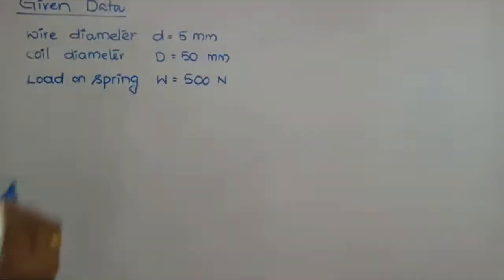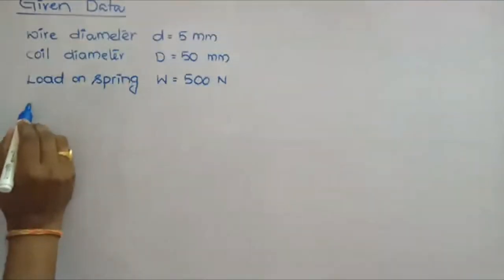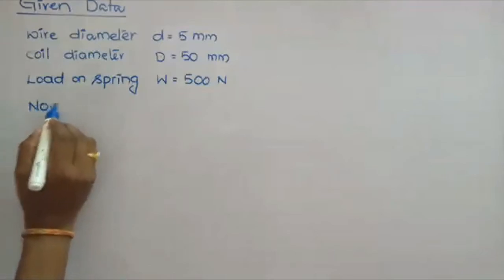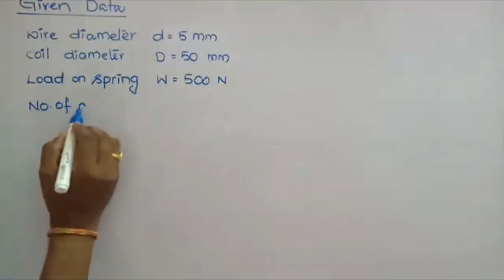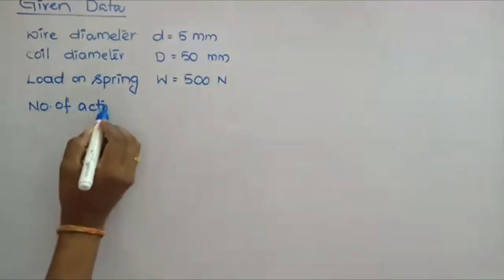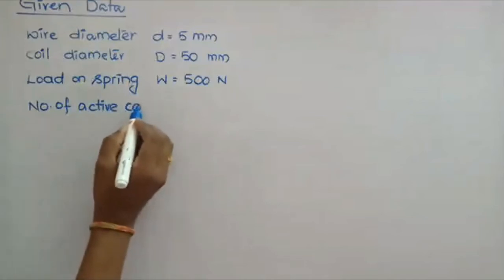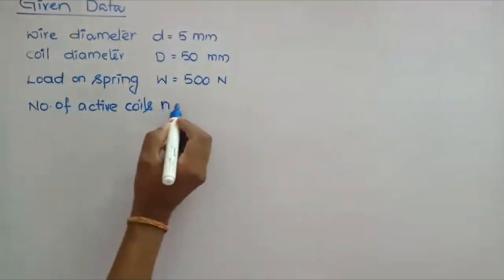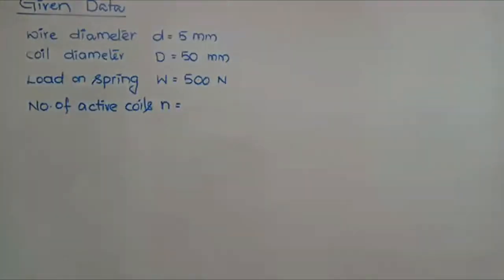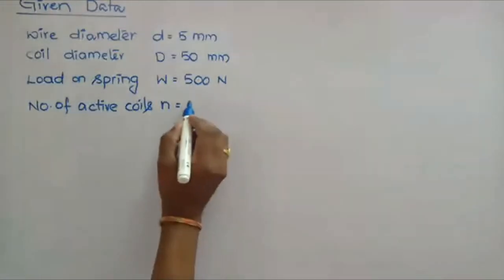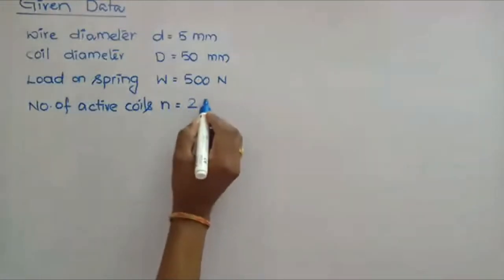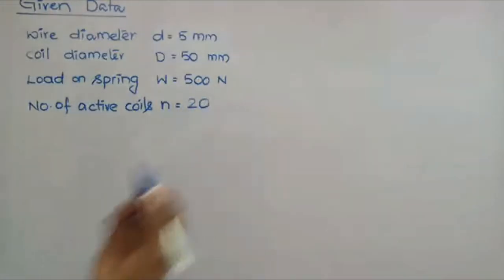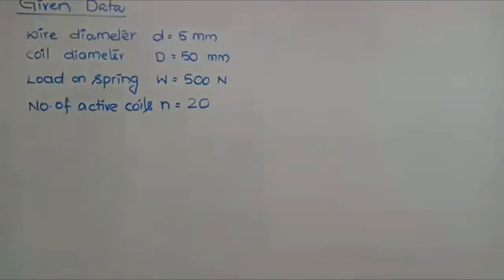Then number of active coils — the notation we use to indicate this is small n — number of active coils equals 20. So this is the data given to you.